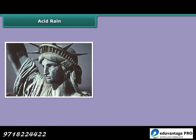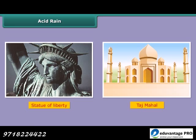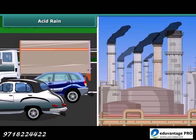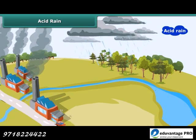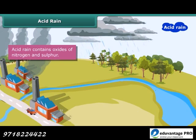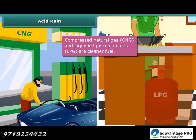These are the images of the Statue of Liberty in New York and the Taj Mahal in Agra. They are badly damaged due to acid rain. Industries and vehicles release toxic gases like sulfur dioxide and nitric oxide into the atmosphere. These gases react with the water vapors present in the atmosphere to form sulfuric acid and nitric acid, which fall as acid rain. Use of clean fuels like compressed natural gas, CNG, and liquefied petroleum gas, LPG, can reduce the acidity of rain.